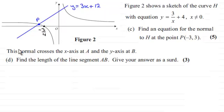Now for this next part it says that this normal crosses the x-axis at the point A and the y-axis at point B. And we've got to find the length of the line segment AB giving your answer as a surd. So again as usual if you'd like to have a go at this and haven't done so just give you a moment to pause the video.